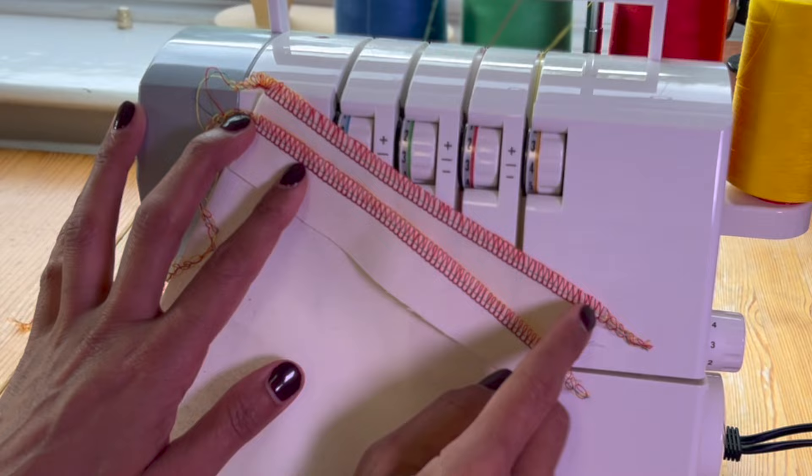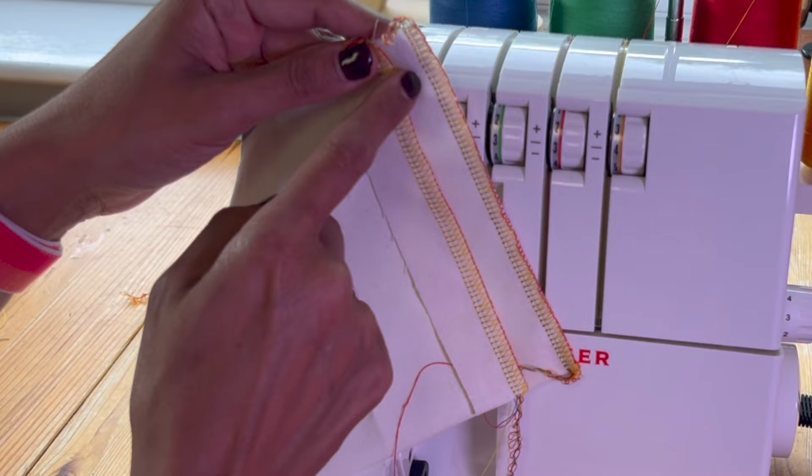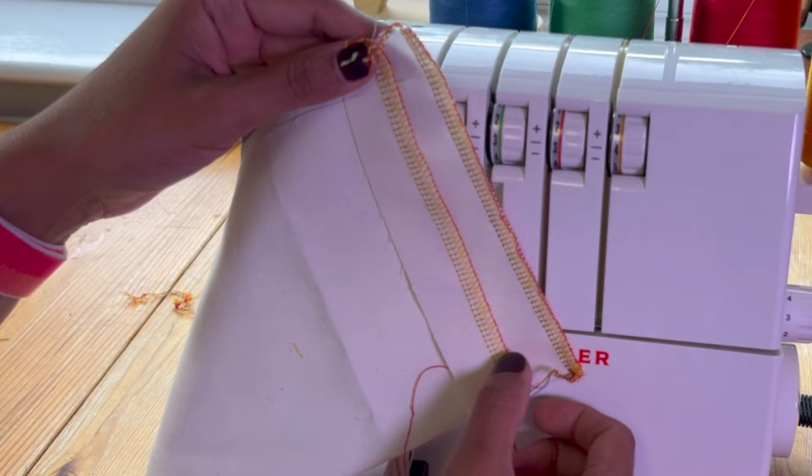If we flip it over, let's have a look at the difference there. Now this is the good stuff. So the loops are sitting nicely on the edge of the fabric and on here they're being pulled to the back because the yellow tension is completely off.